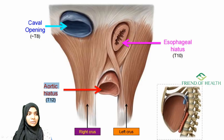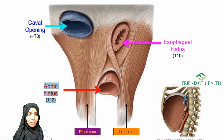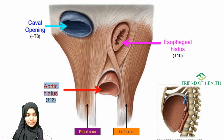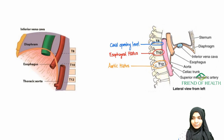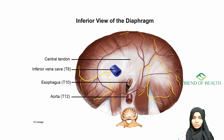The vena cava opening is at the T8 level, the esophageal opening is at the T10 level, and the aortic opening is at the T12 level. Again, from the pictures: at T8 we have the vena cava opening, at T10 we have the esophageal opening, and at T12 we have the aortic opening.